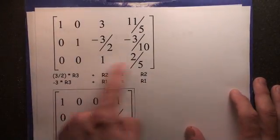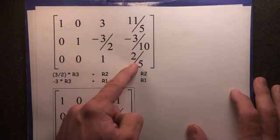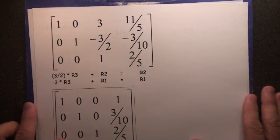Look at this. z equals 2/5, which is the correct answer because we already did this problem before in video number 101.